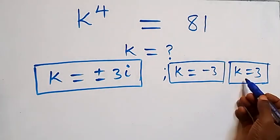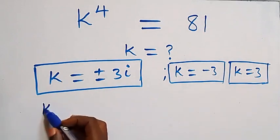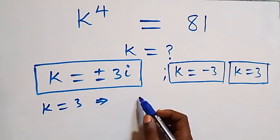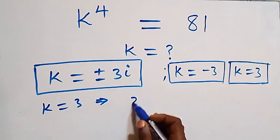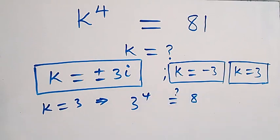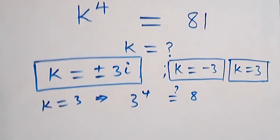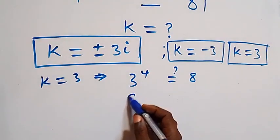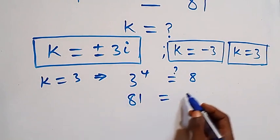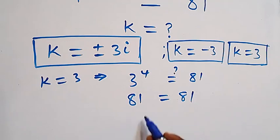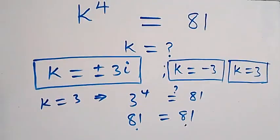Let's substitute k equals 3 first. We get 3 raised to power 4, which is 3 multiplied four times, equals 81. This equals 81, so left hand side equals right hand side.